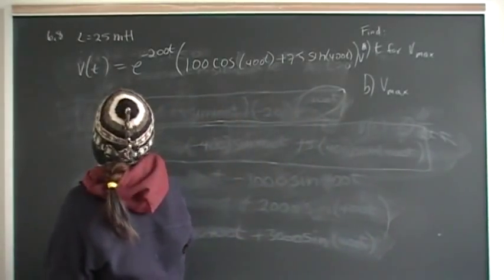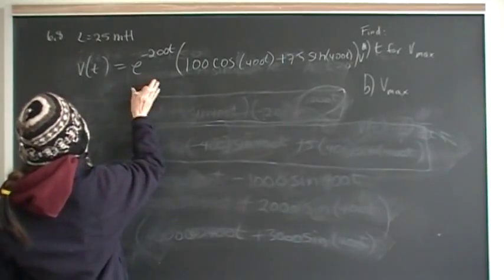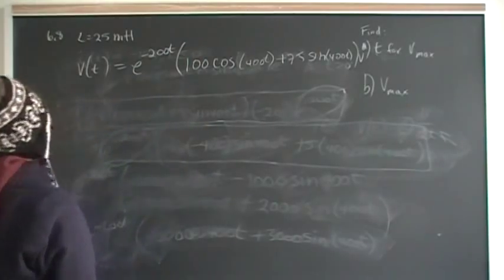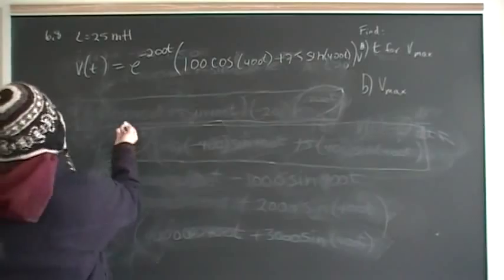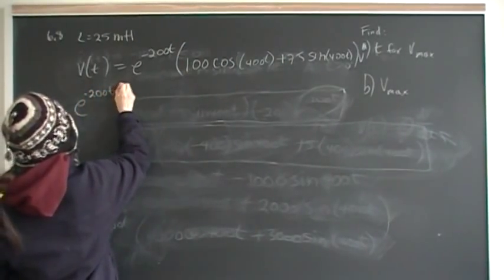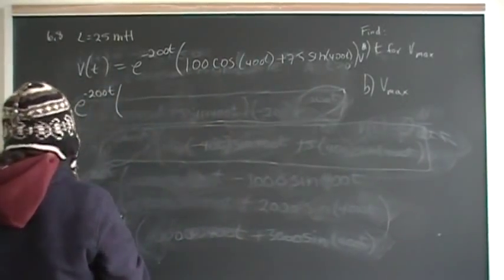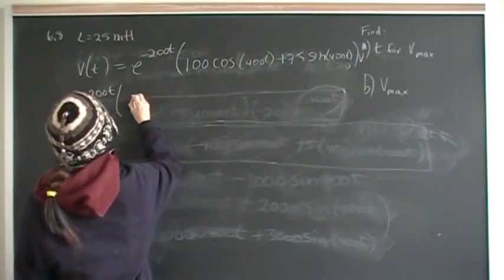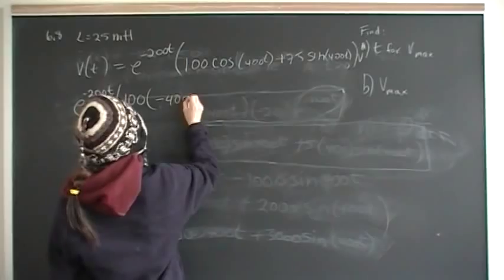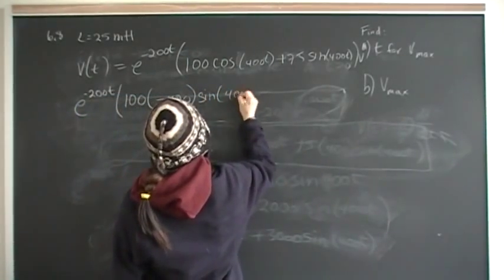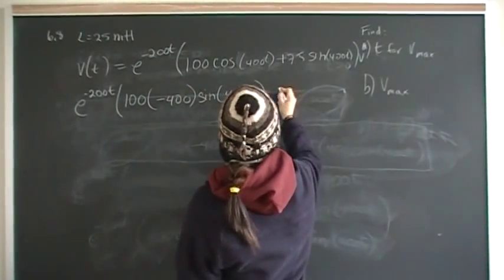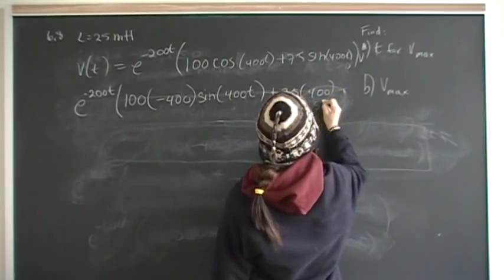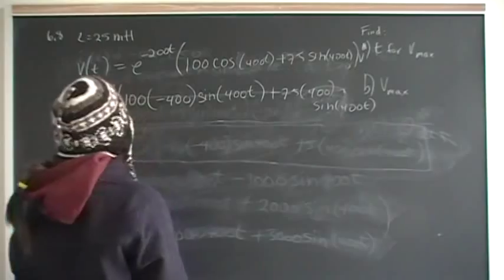Now that we have the voltage function, we differentiate it to find the time where it is at maximum. Applying the product rule again: e to the minus 200t times the derivative of the trig part gives e to the minus 200t times negative 40,000 sine 400t — since the derivative of cosine is negative sine, so 100 times negative 400 — plus 75 times 400 cosine 400t.